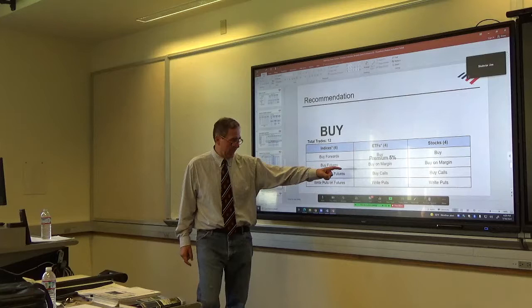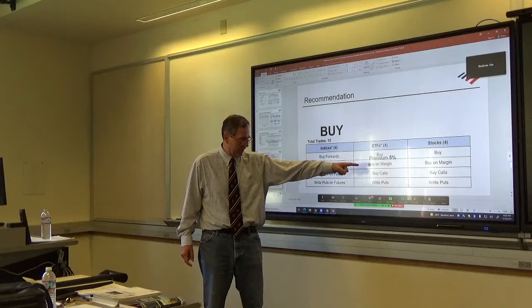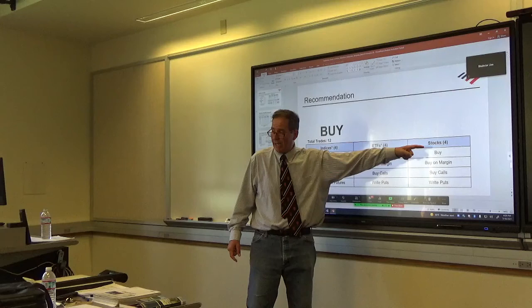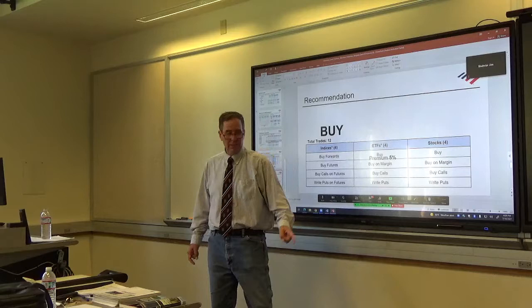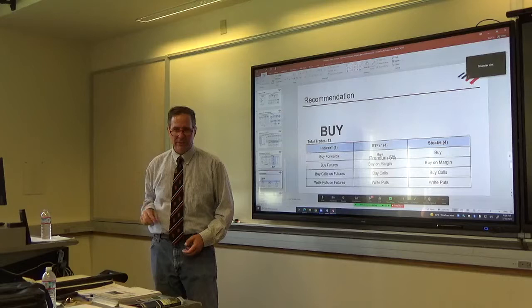We're tracking and trading for financial services, exchange-traded funds. We're going to buy, buy on margin, buy calls and write puts. So we have four trades there, too. And we're trading the stock, the B of A stock. We recommend buying, buying on margin, buy calls and write puts for another four trades. So we have a total of 12 trades that we can call up to our proprietary trading unit to trade B of A.